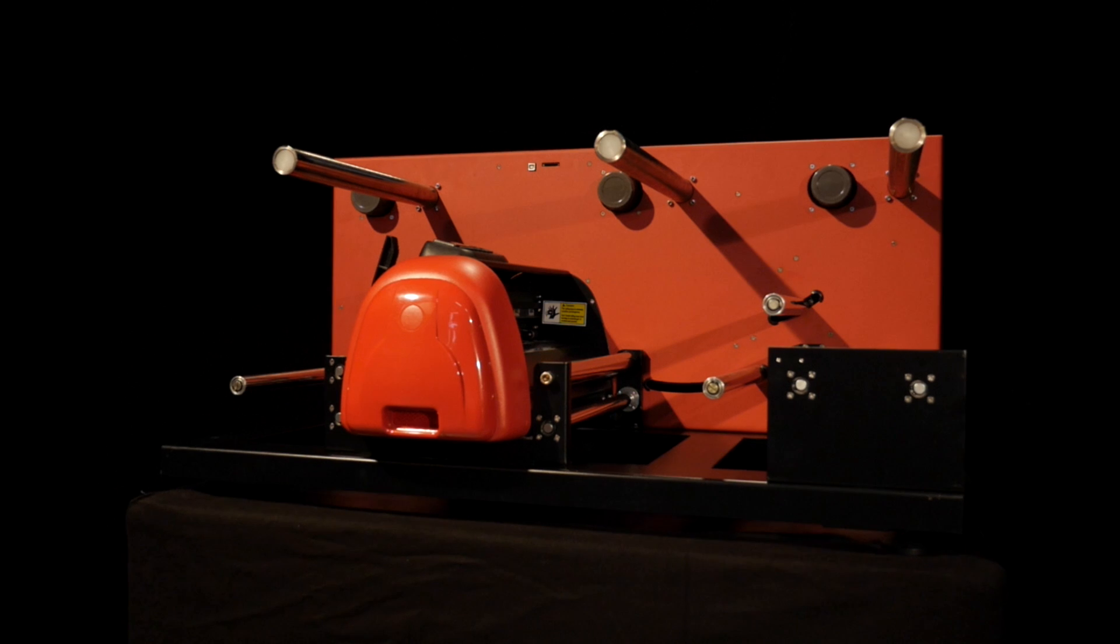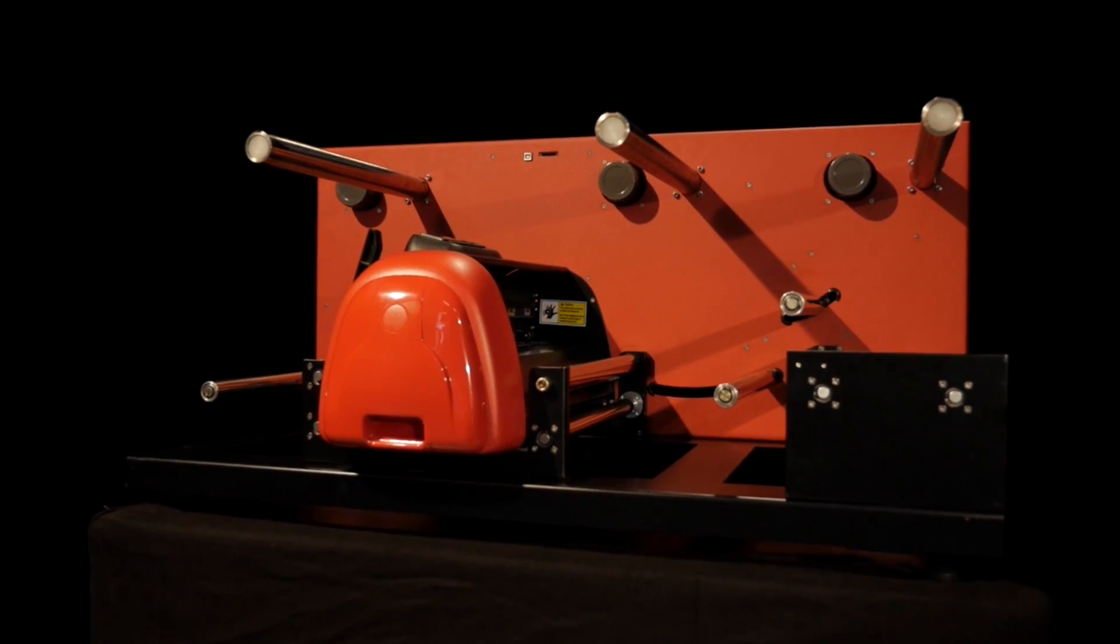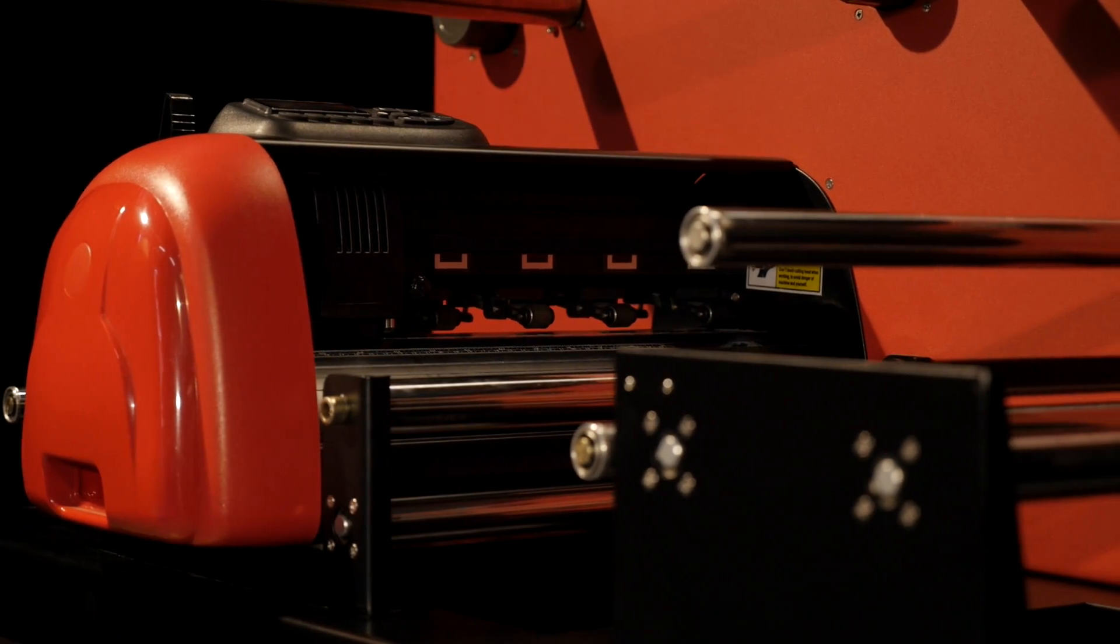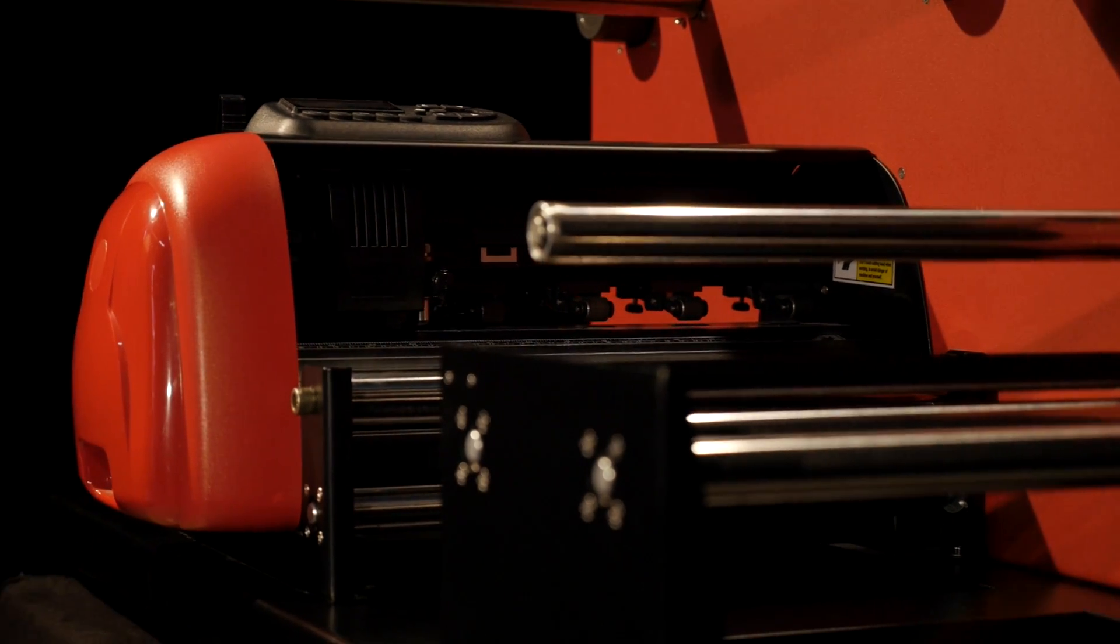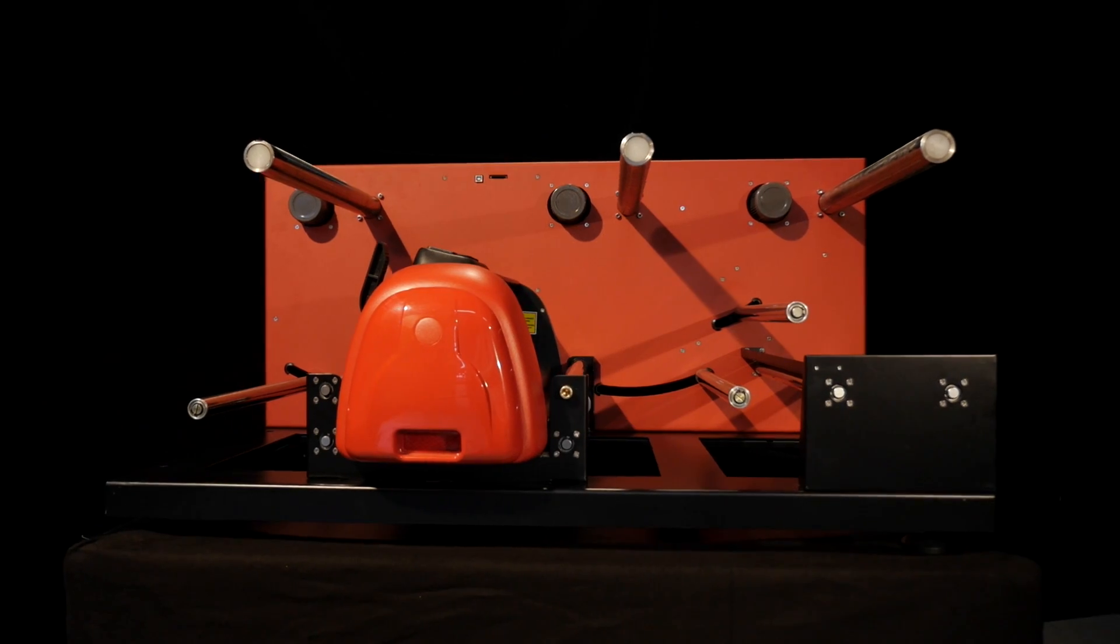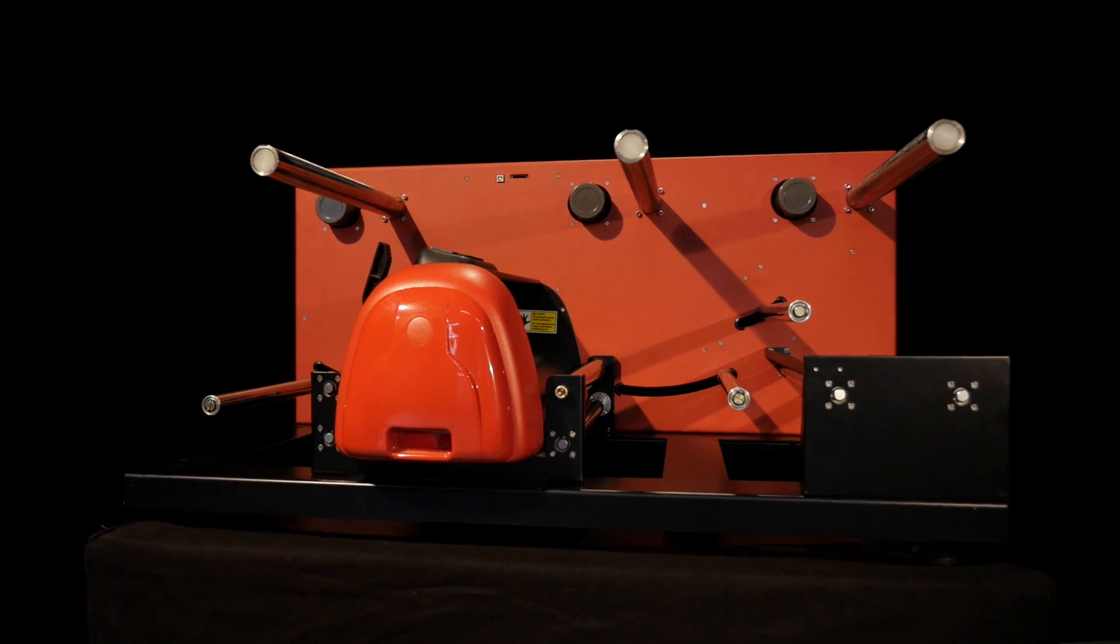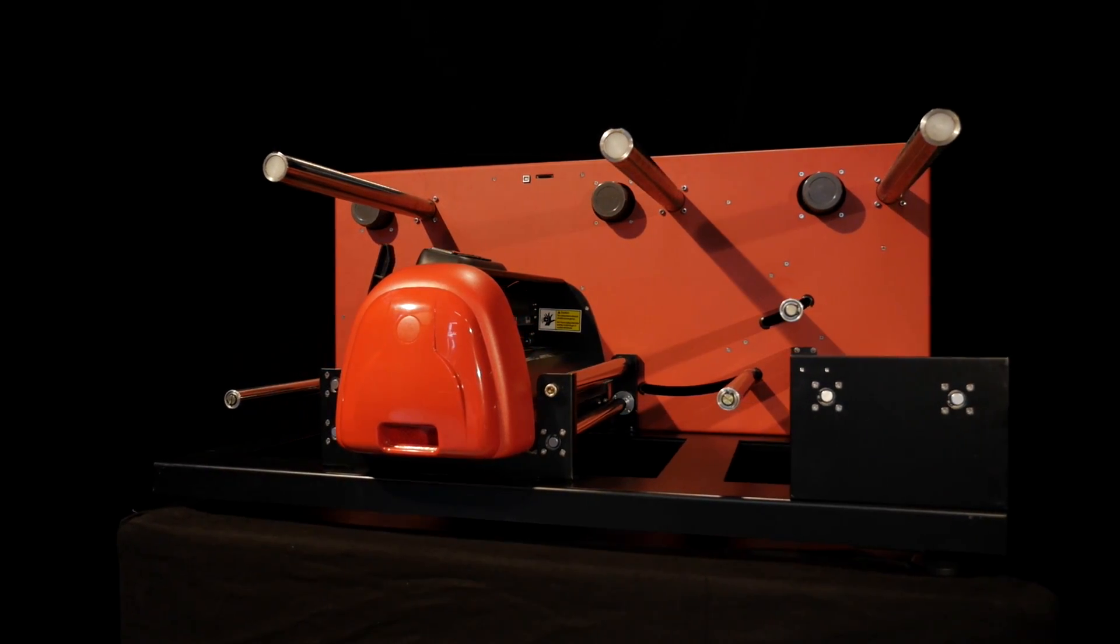The LC30 is the perfect label finisher for labels and tags of all shapes and sizes for small to medium quantities, making it an ideal flexible machine for use in large production sites, as well as small and medium sized companies, such as the food and beverage industry.